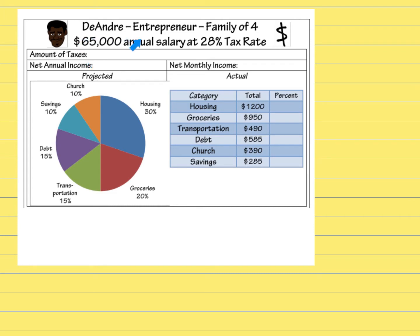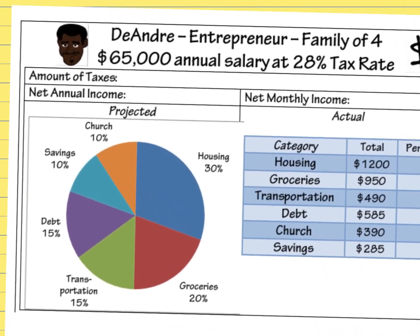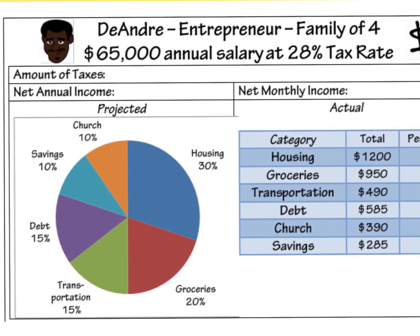Take your annual salary and multiply it by the tax rate as a decimal. The annual salary was $65,000, so I'm going to type $65,000 times 0.28 into my calculator. Remember, you're just taking your percentage and dividing by 100. That tells me the amount of dollars spent in taxes, which is $18,200.